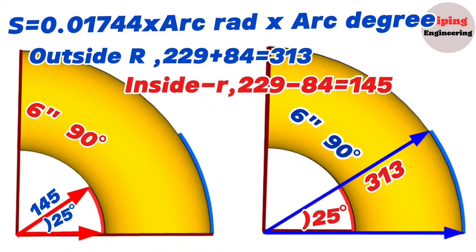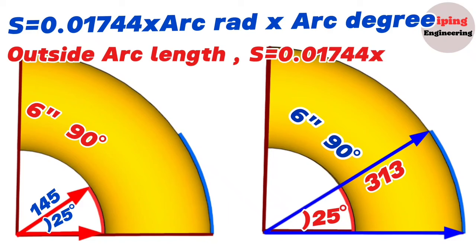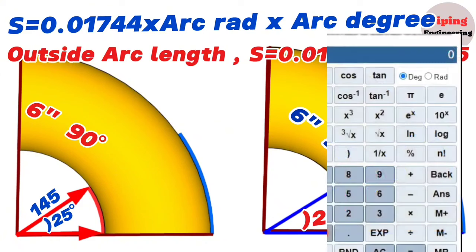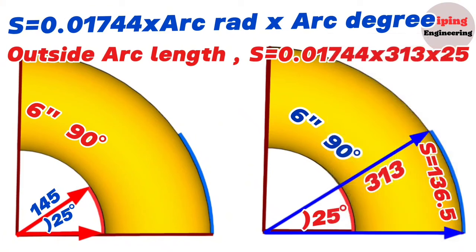Using the arc length formula, the outside blue arc length S equals 0.01744 × 313 × 25 equals 136.5 millimeters. So the 25-degree outside arc length is 136.5 millimeters.